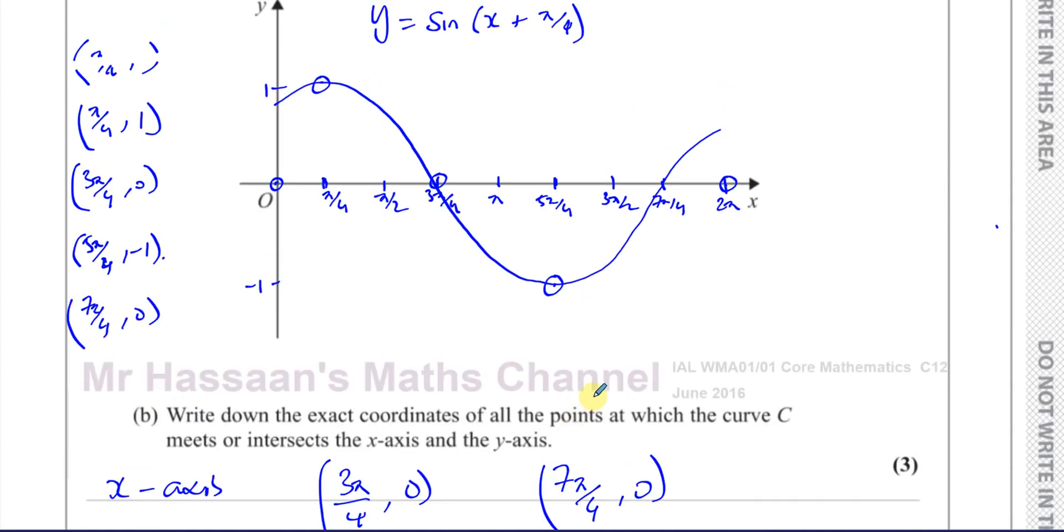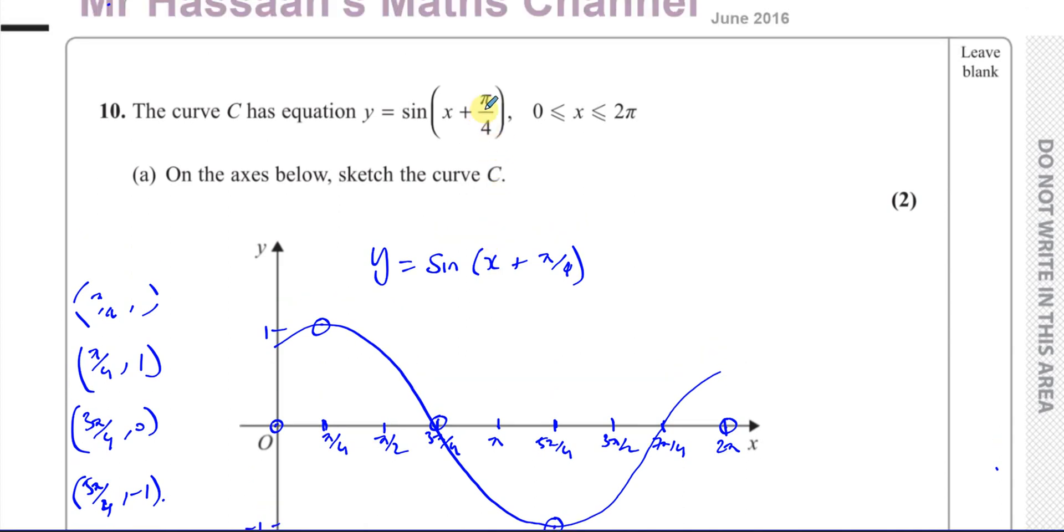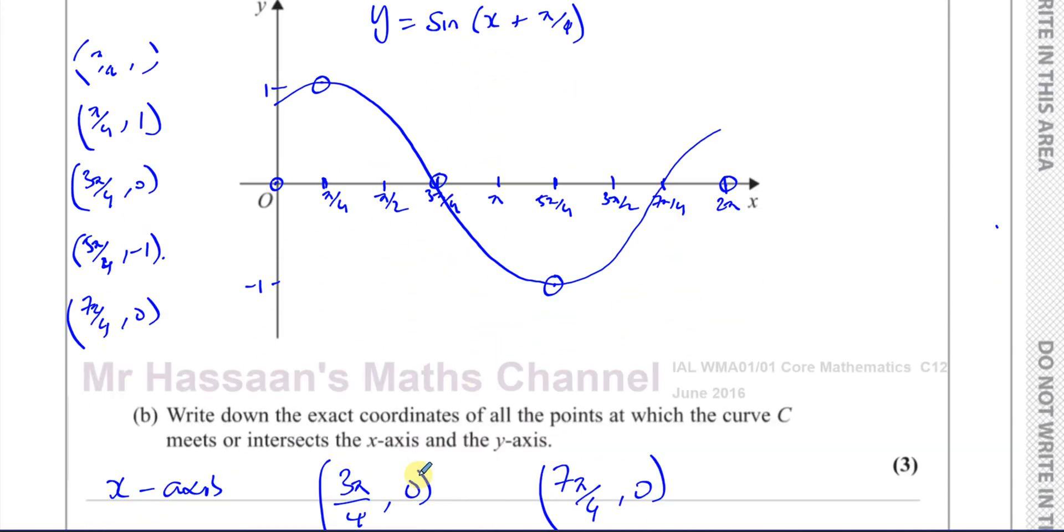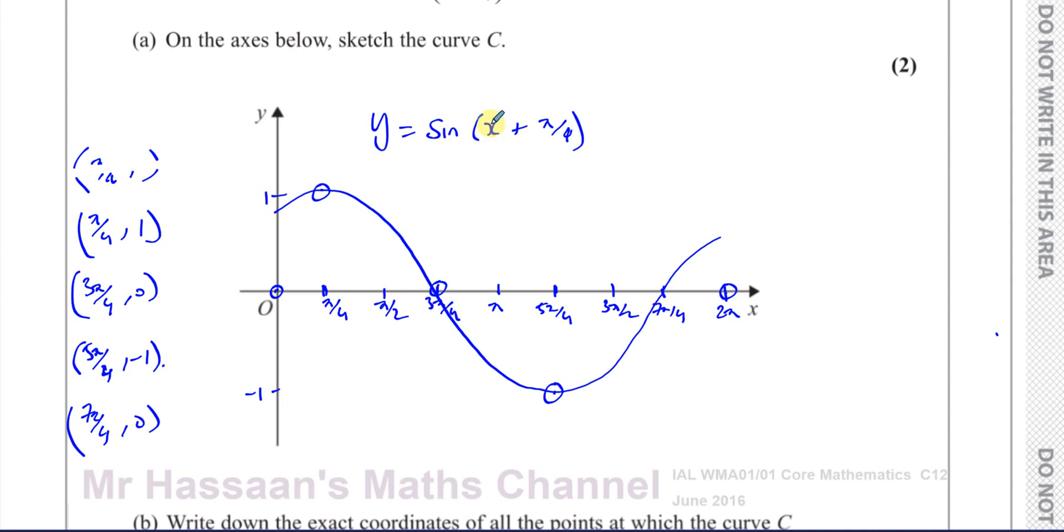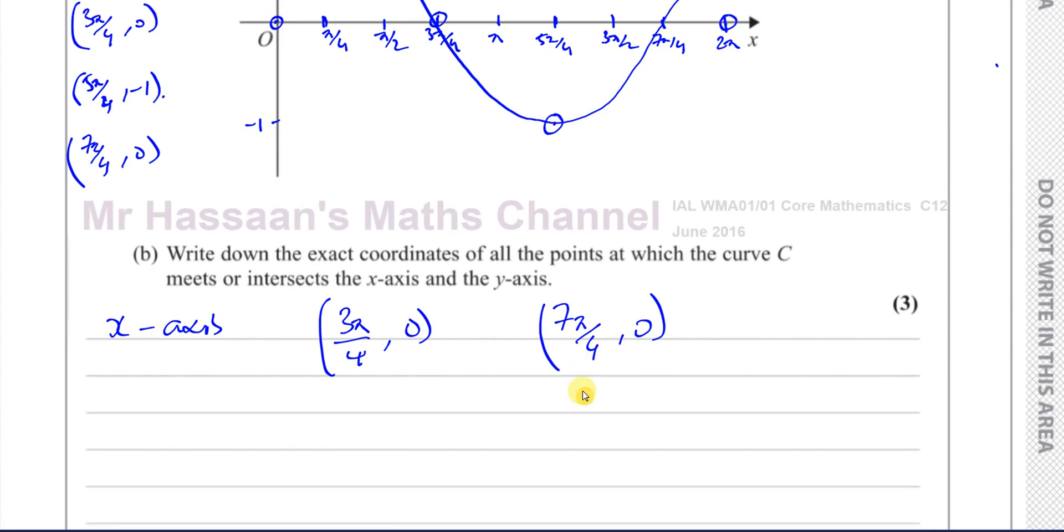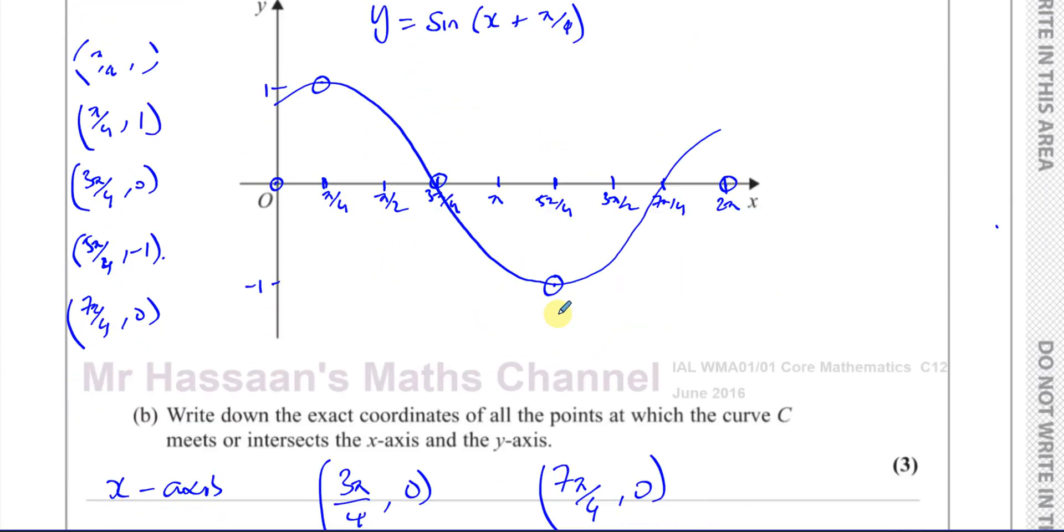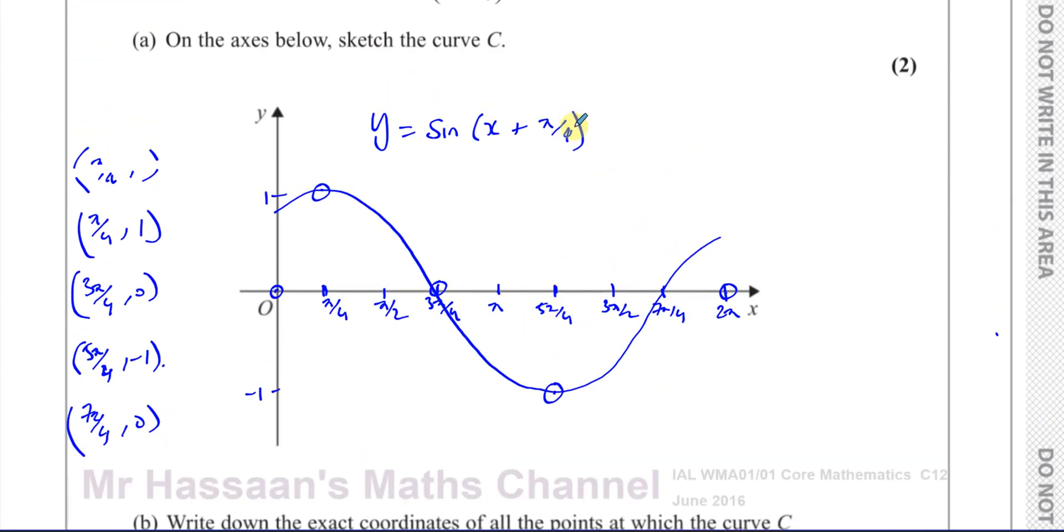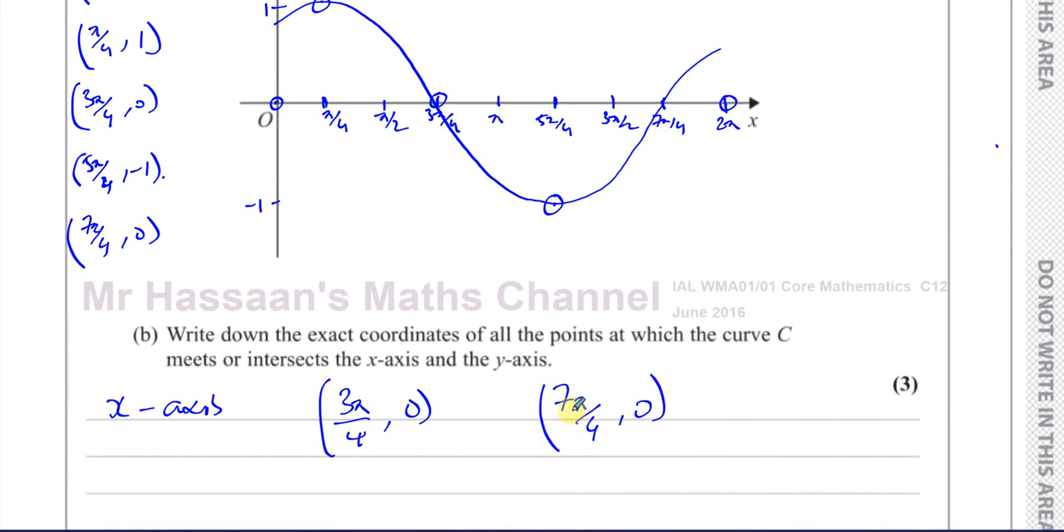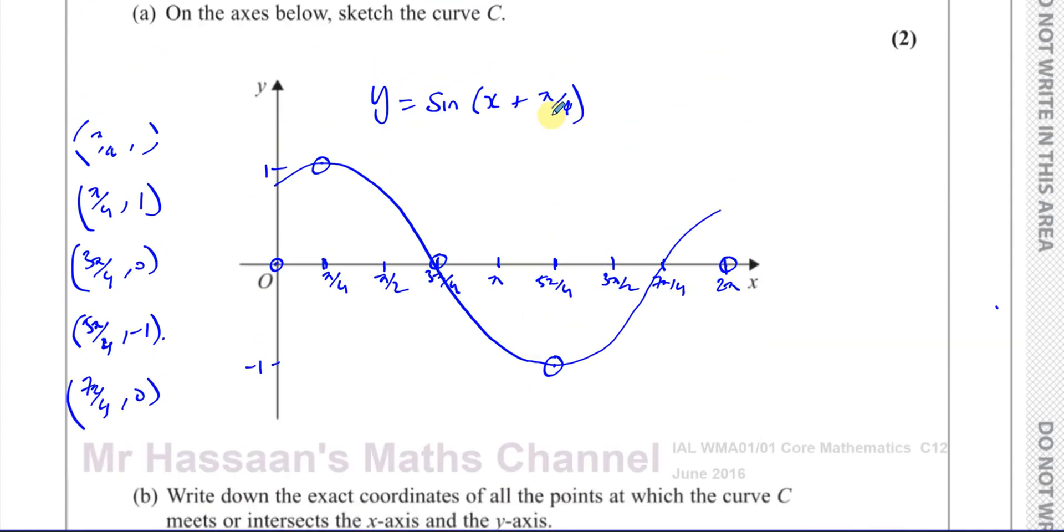If you wanted to, you could test that by replacing the x with 3 pi over 4. If I put 3 pi over 4 instead of x, this is going to give me the sine of 3 pi over 4 plus pi over 4, which is the sine of pi. And we know that the sine of pi is 0. So that works. And the sine of 7 pi over 4 plus pi over 4 is the sine of 8 pi over 4, which is the sine of 2 pi, which is also 0. So these coordinates do match with where this will give you y equals 0.